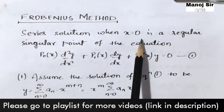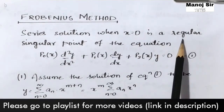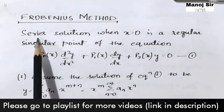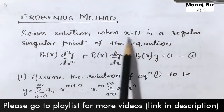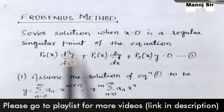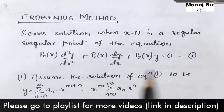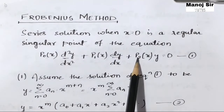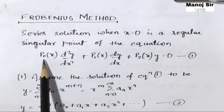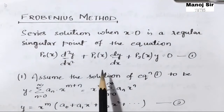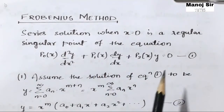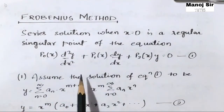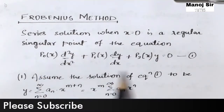We are looking at the series solution when x equal to 0 is a regular singular point of the equation: p0 d²y/dx² plus p1 dy/dx plus p2 y equals 0, where p0, p1, p2 are polynomials of x (functions of x). Then only we are going to use this Frobenius method to get the solution of this equation.